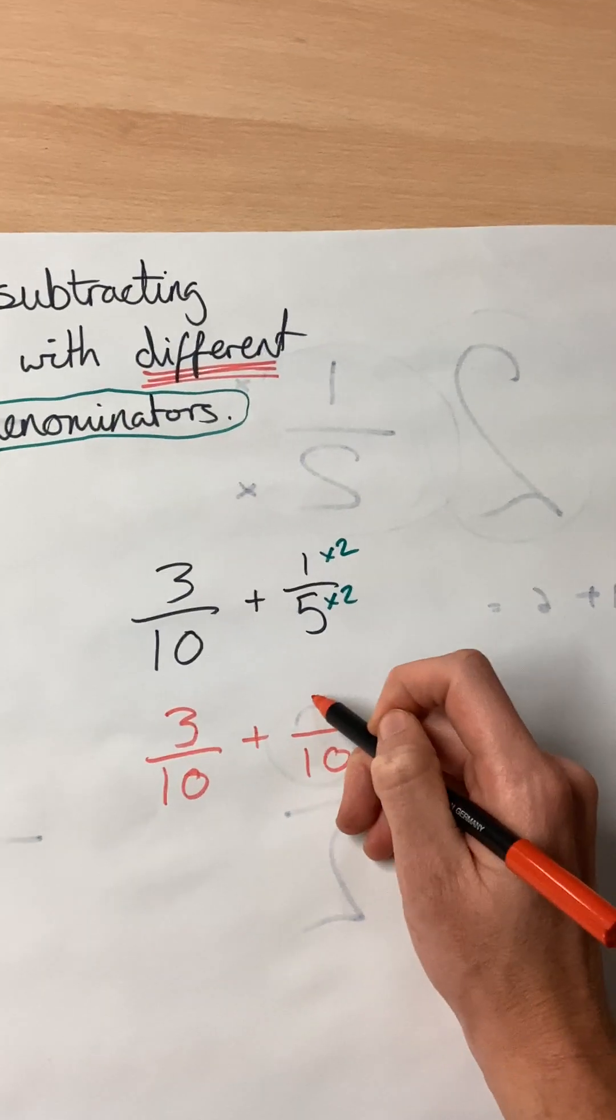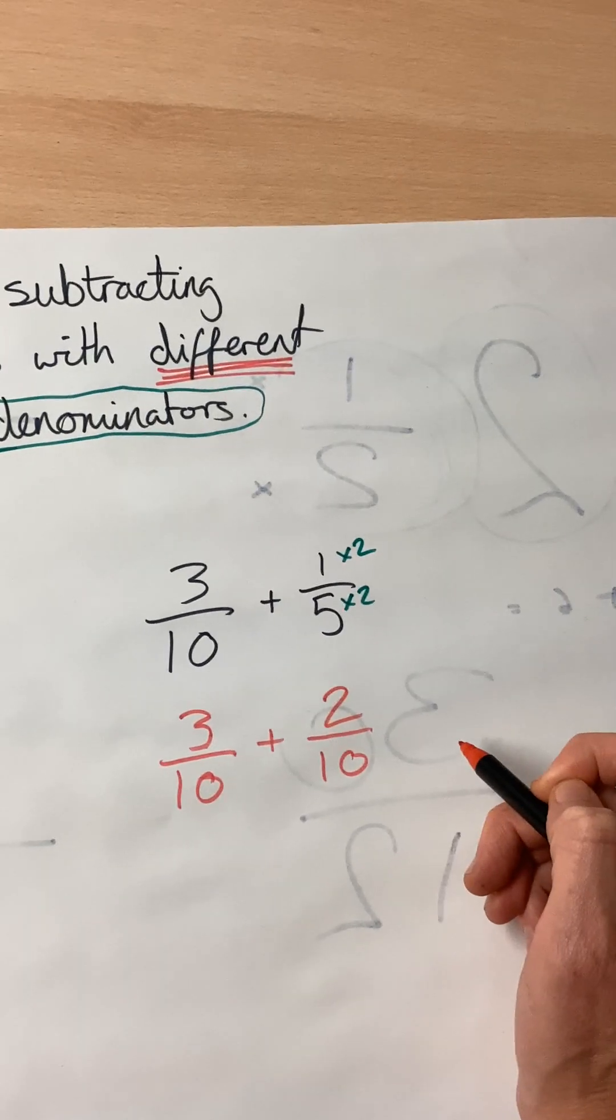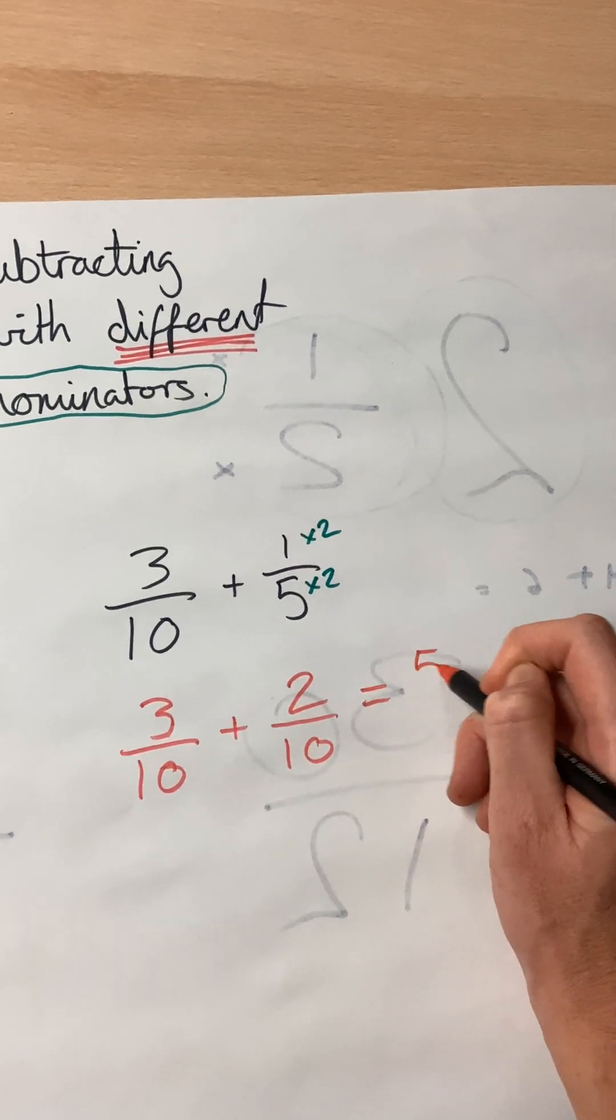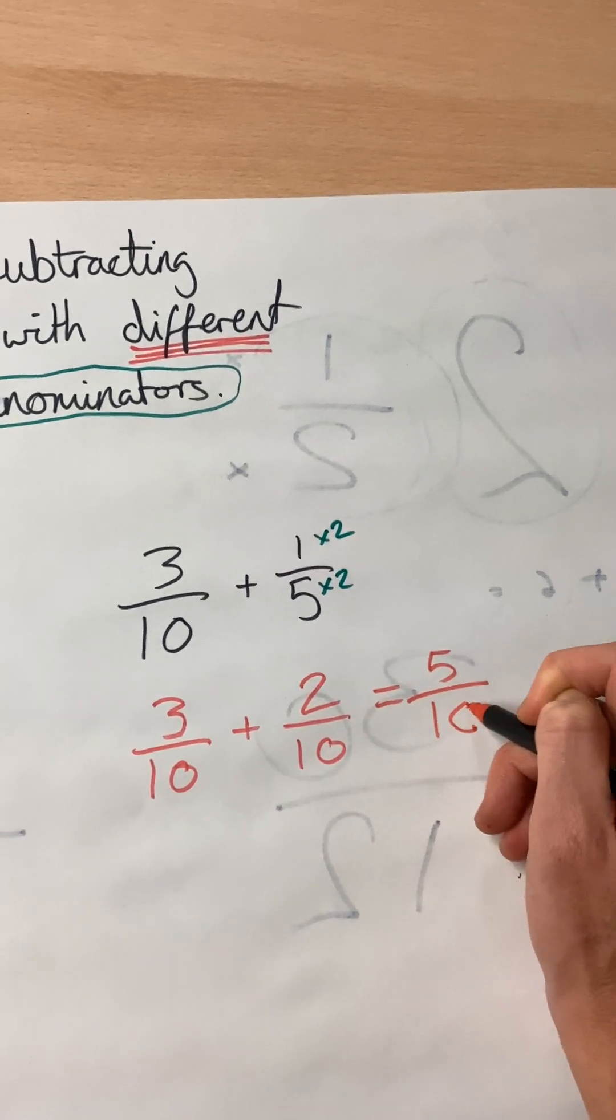So that means the top number are also times two. So one times two is two. Then we can do three-tenths plus two-tenths equals five-tenths.